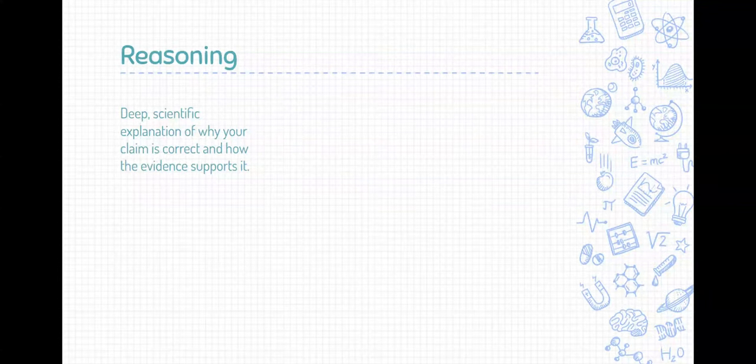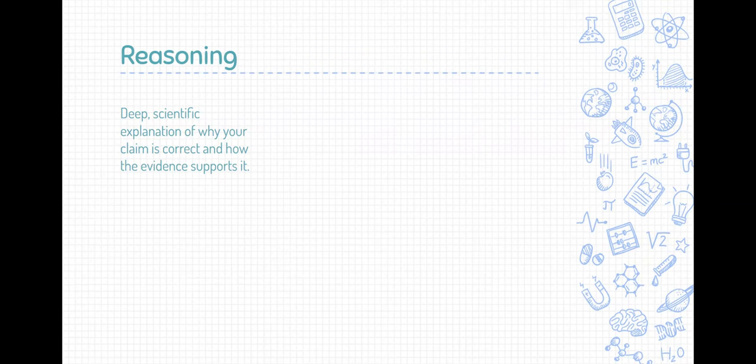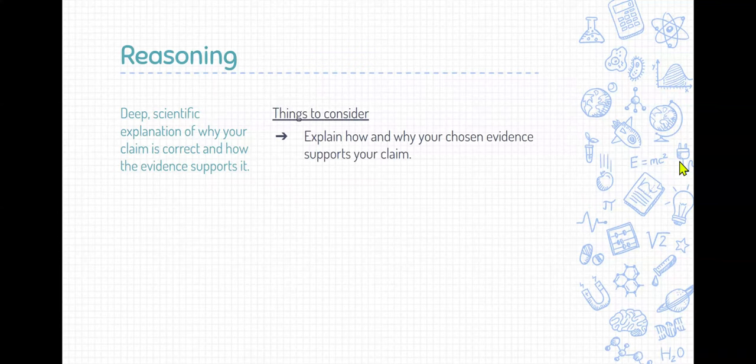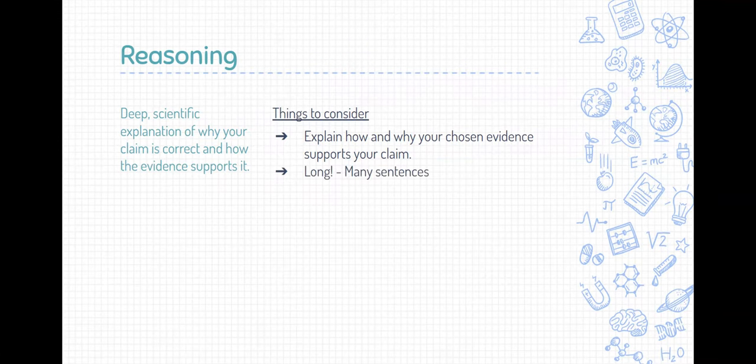Alright, let's end up with reasoning. The reasoning is the longest, deepest scientific explanation of everything. So this is a deep scientific explanation of why your claim is correct and how the evidence supports it. So stuff we should consider here, we need to explain how and why your chosen evidence supports your claim. So we're kind of backing up our claim with the evidence that we chose, and we're explaining the evidence, and we're explaining the claim. This should be long.